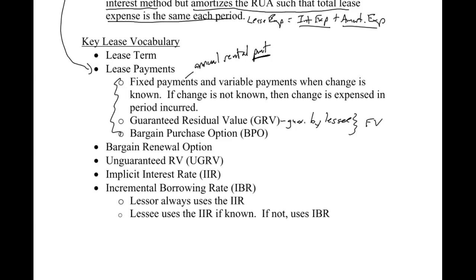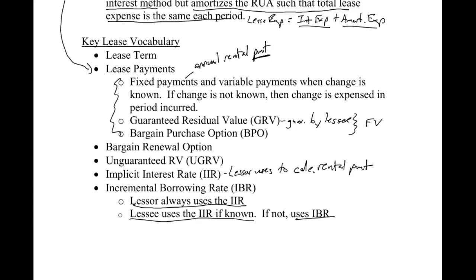A bargain renewal option is the ability to renew the lease. An unguaranteed residual value means there is a residual value but it's not guaranteed. The implicit interest rate is what the lessor uses to calculate the rental payment — the lessor always determines the payment based on what they want to earn. The lessee will use the implicit rate if it is known; if not, they use the incremental borrowing rate, which is basically what they would pay to finance it somewhere else.